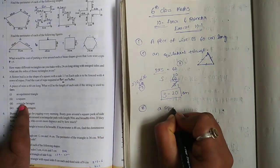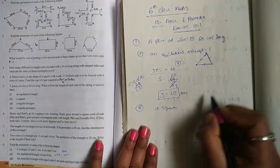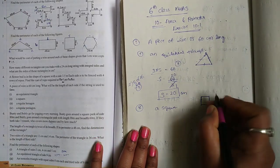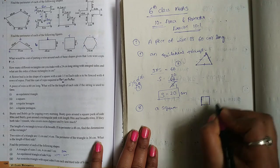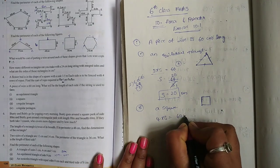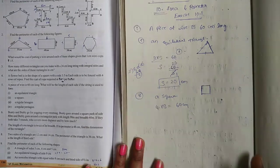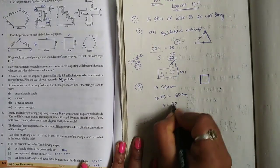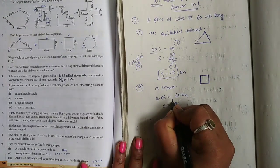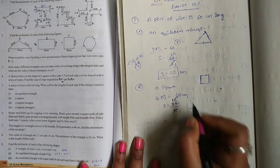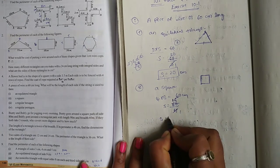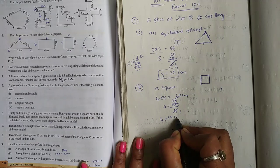Second one: square. A square has 4 sides equal. So 4 into S is equal to 60 cm. S is equal to 60 by 4, so S is equal to 15 cm.